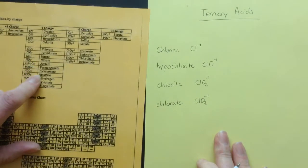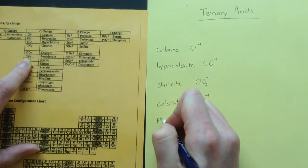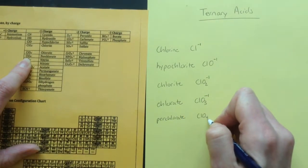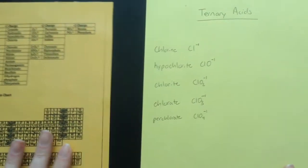And then there's another one, ClO4, which is perchlorate. And that one is ClO4, and it also has a minus one charge, so these all have a minus one charge.